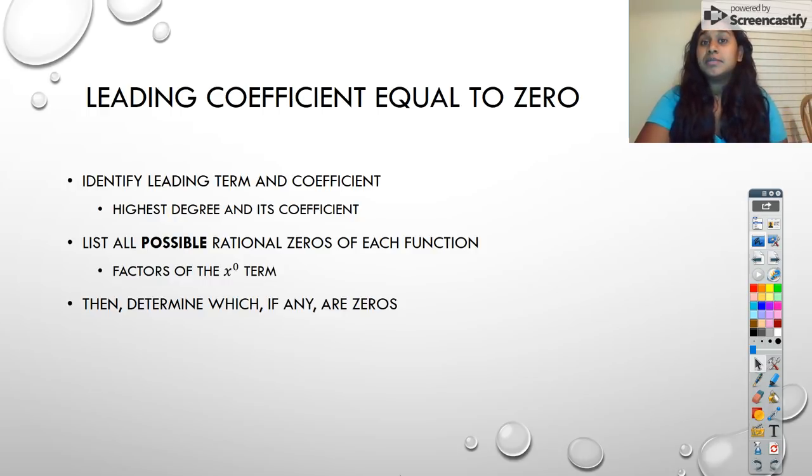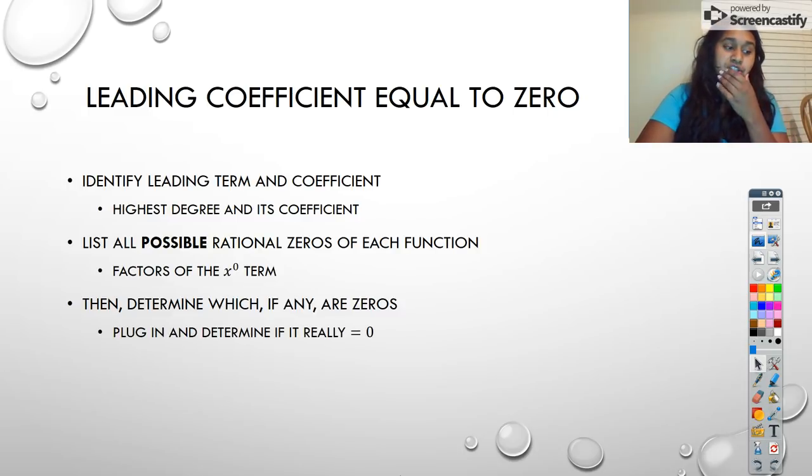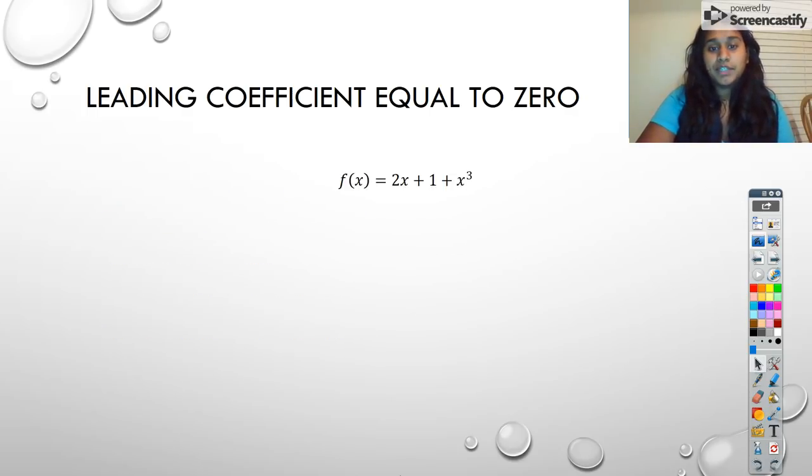We're going to determine it in one of two ways. You can either use direct substitution or you can use synthetic substitution, which we know is synthetic division. The main thing you're checking is does your function value actually equal 0 because that would be a true zero of your function.